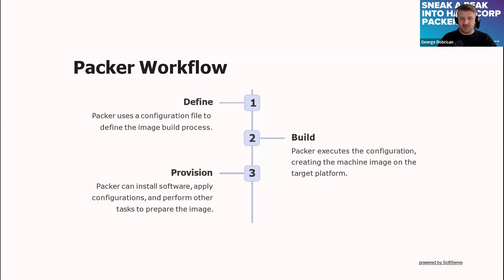How does it work? It uses a configuration file where you define everything, it builds the configuration, and then it provisions the AMI. In the backstage, what it does is launch an instance that you specify — you specify an instance type, memory, CPU, and operating system — and it uses that instance to do everything that you need. Afterwards it launches the instance, installs everything, terminates the instance, and creates the AMI.